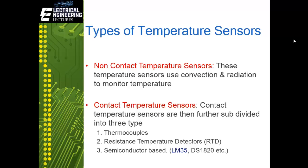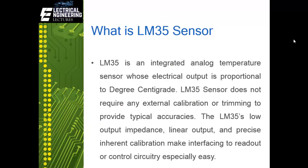The last category is semiconductor-based sensors, which include LM35, DS1820, and DHT22. Most of them are analog, but recently sensors have become digital. We will focus on the analog sensor, which is the LM35. The LM35 is an integrated analog temperature sensor whose electrical output is proportional to degrees Celsius. It does not require any external calibration or trimming. Its low output impedance, linear output, and precise inherent calibration make interfacing to readout or control circuitry especially easy.